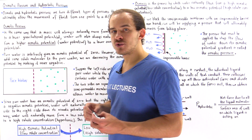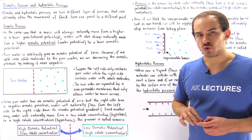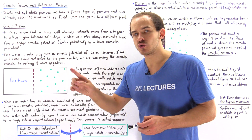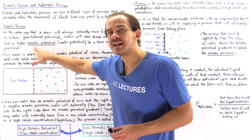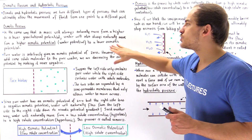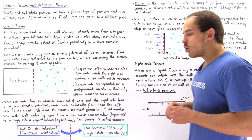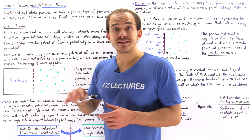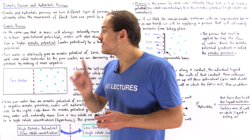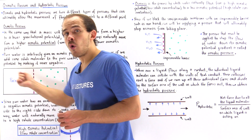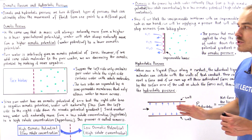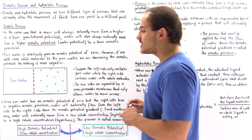In the same analogous way, a water molecule will always move down its water potential gradient, also known as the osmotic potential gradient. Water naturally moves from a high osmotic potential to a low osmotic potential. Just as we define the ground as zero potential for a mass, we assign pure water an osmotic potential of zero.